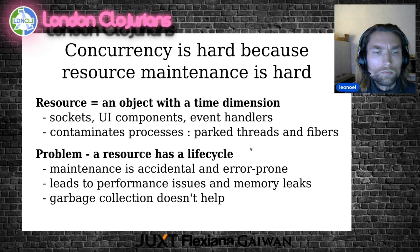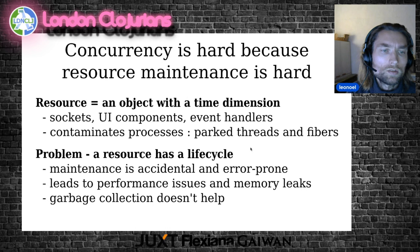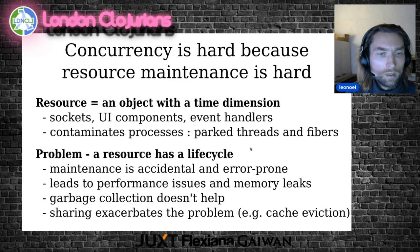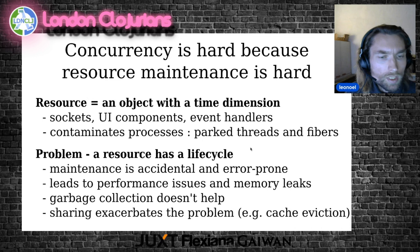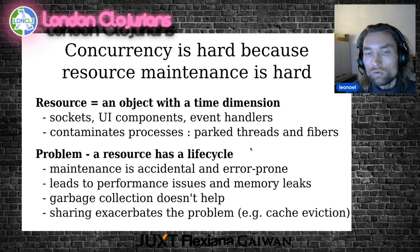Garbage collection doesn't help. The reason why it doesn't help is because the reference to the resource is bidirectional. It is referenced by the consumer and it is also referenced by the producer. Therefore, the producer has no way to know if the resource is still needed anymore, so you cannot rely on garbage collection. The problem is even worse with sharing. Cache eviction is the most famous instance of this problem. When you have multiple consumers that share the same resource, they need to coordinate to agree on the right way to manage the life cycle of the resource.